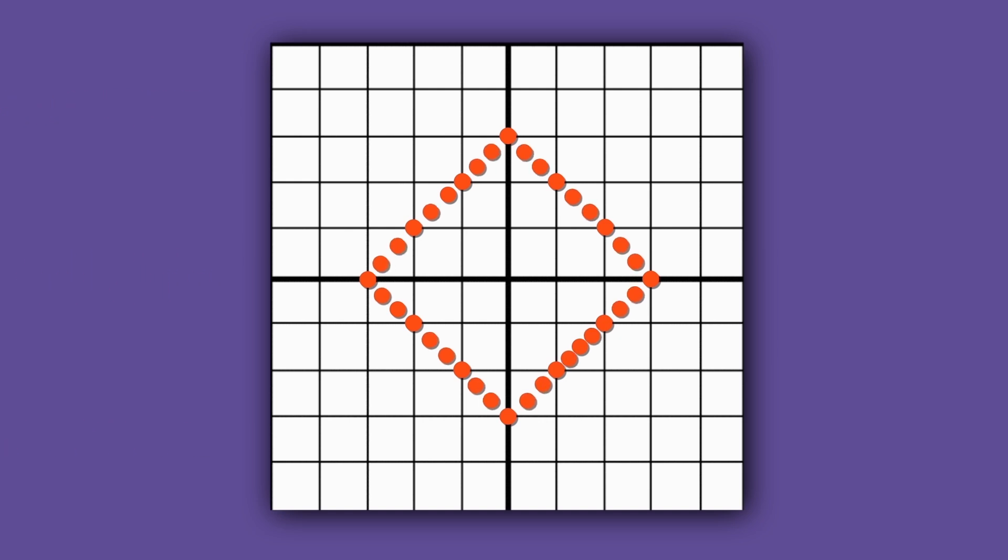If we keep filling in the points, we eventually get a shape that looks like a diamond. That's the taxicab circle.